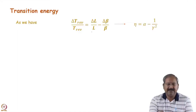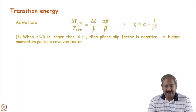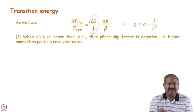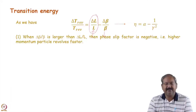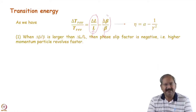Since delta T / T = delta L / L − delta beta/beta, one factor increases revolution time and the other decreases it. At some particular energy or beta, both components can cancel each other, so delta T_revolution / T_revolution becomes zero. This is known as transition energy. When delta L / L is larger than delta beta/beta, the frequency slip factor is positive — this occurs for highly relativistic particles where changing energy barely changes beta.